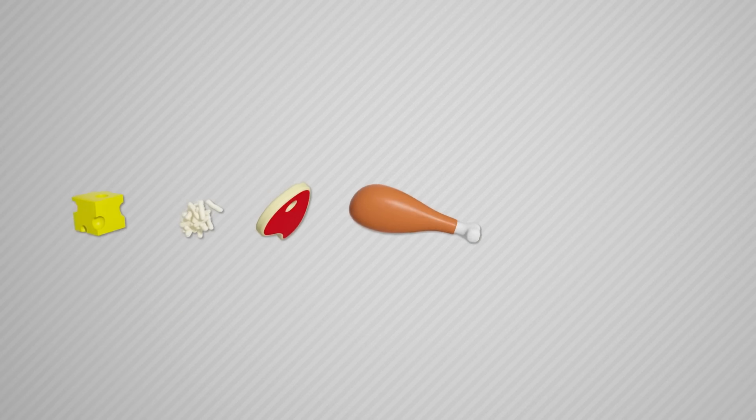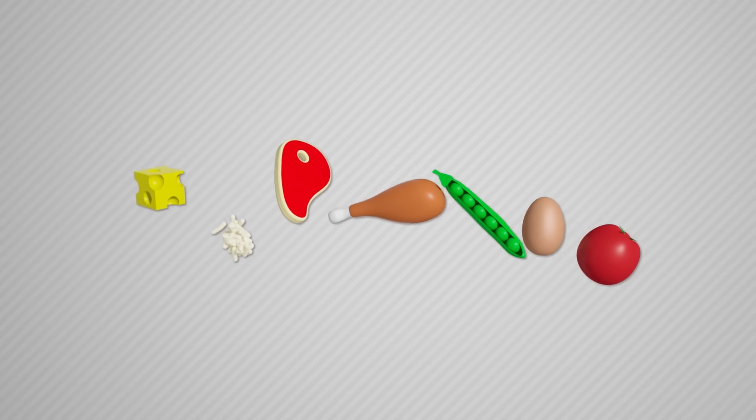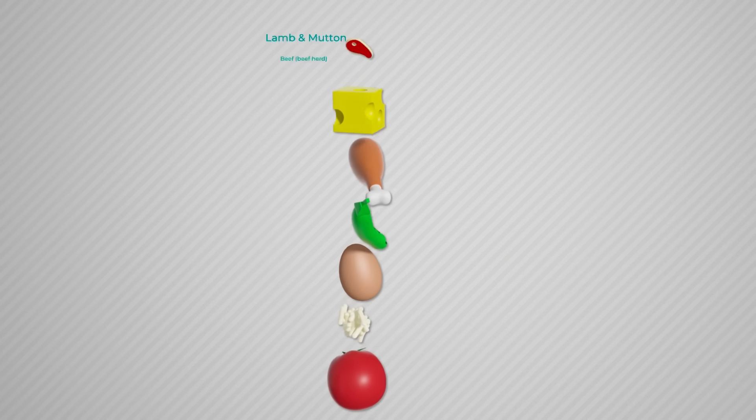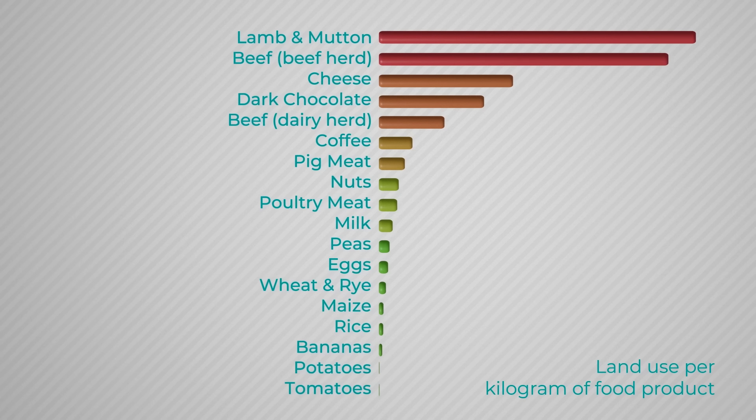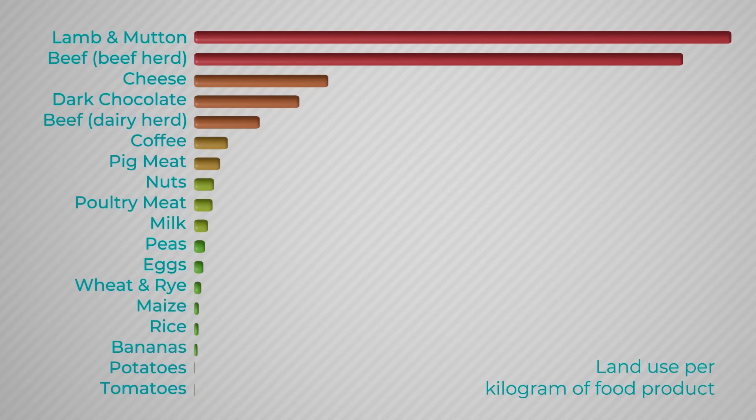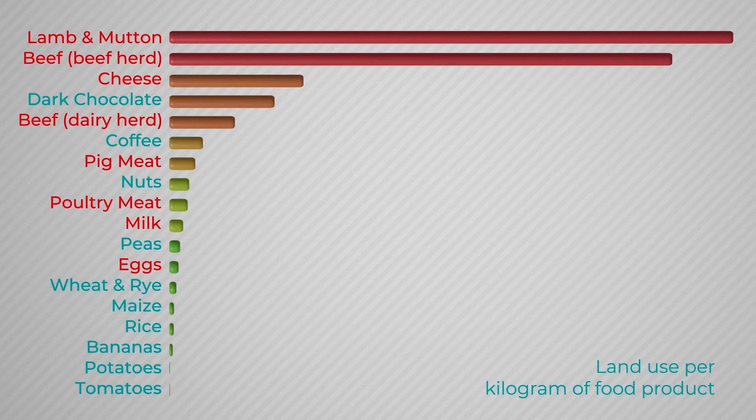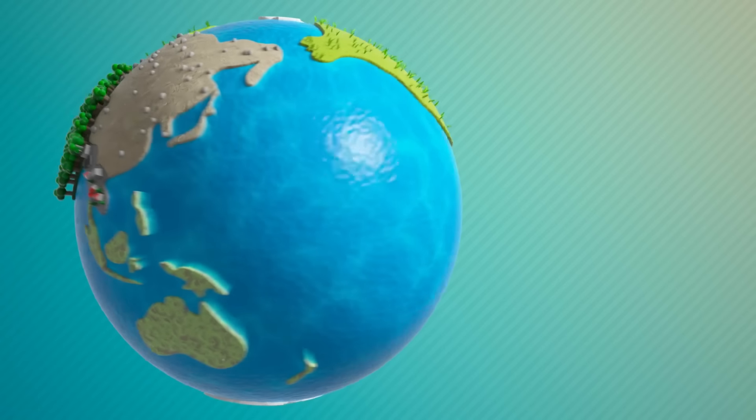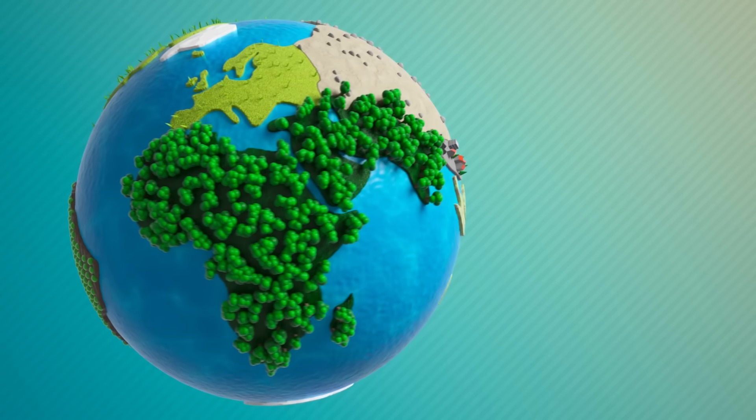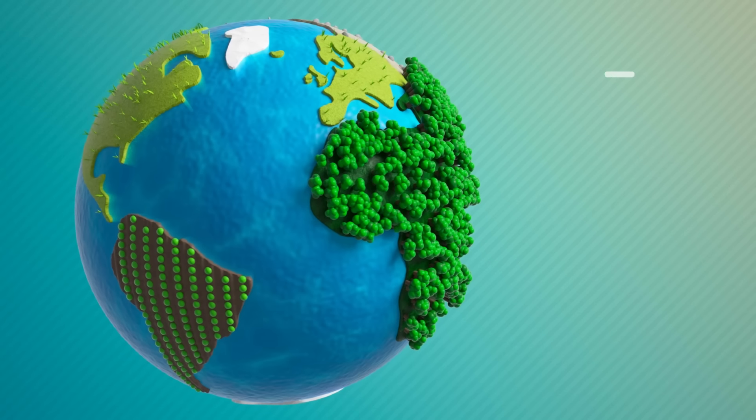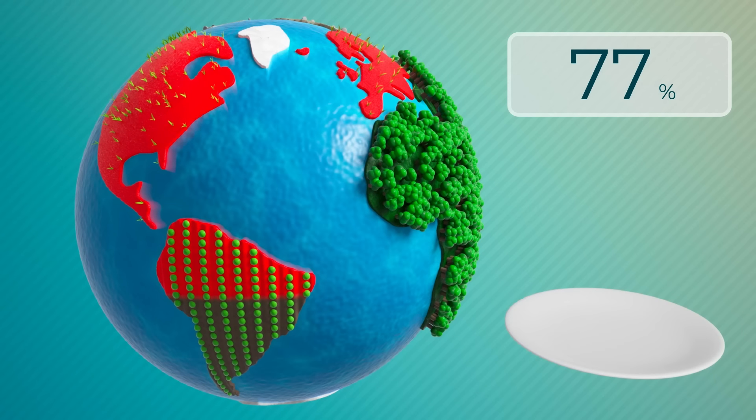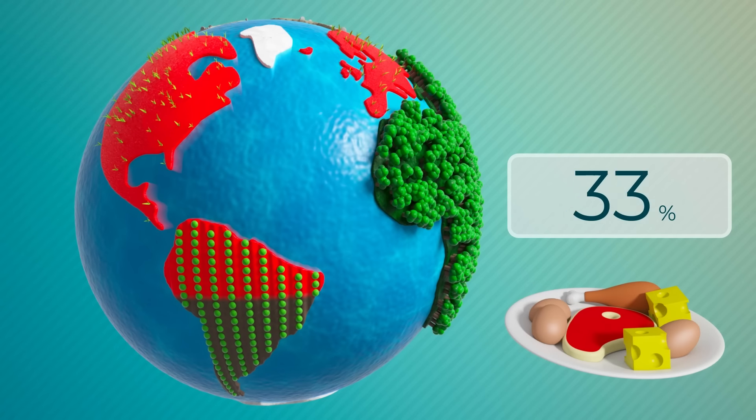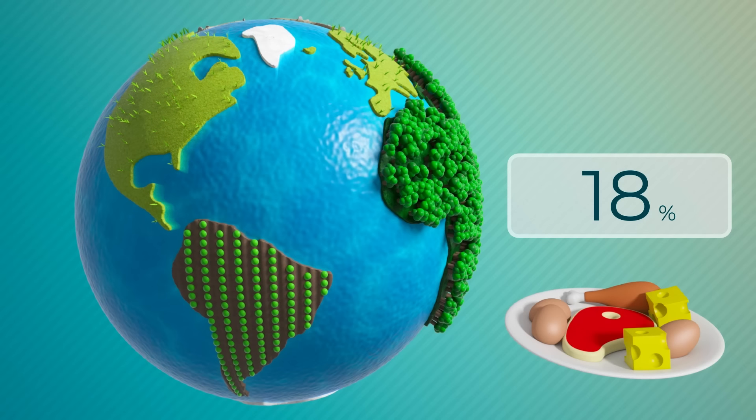The second important element is what kind of food we eat. The environmental impact of food differs depending on the type of food that's produced. In general, animal products have much larger environmental impacts, including land requirements, compared to plants. Because of the amount of land necessary to produce animal products, livestock production currently uses 77% of agricultural land, but these products only supply 18% of global calories.